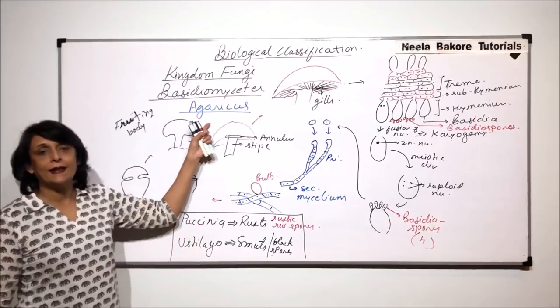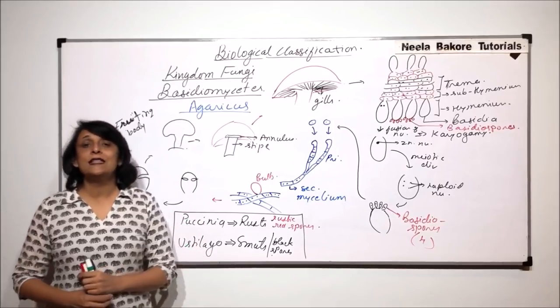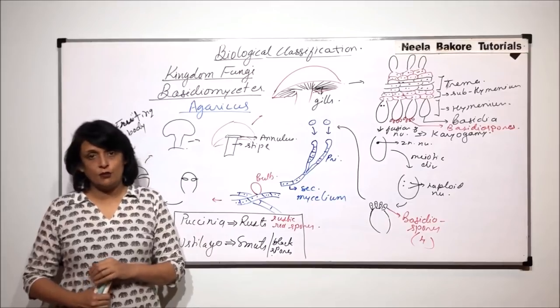These two, that means agaricus, Pucenia, Eustilago, these are the members of baesidiomycetes.